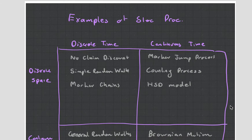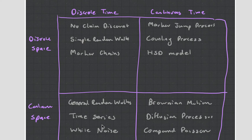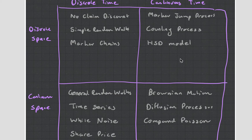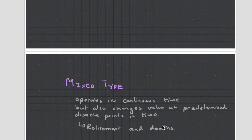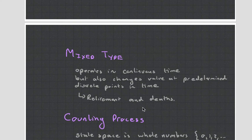You can have discrete time discrete space, continuous time discrete space, discrete time continuous space, and continuous time continuous space — and there are various examples which you need to know. You can also get some mixed up, where it operates in continuous time but changes at predetermined values. The big example with that is retirements and deaths, and you can see how this starts linking in with actuarial courses.